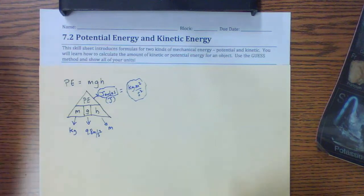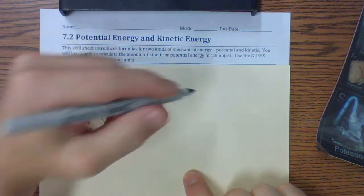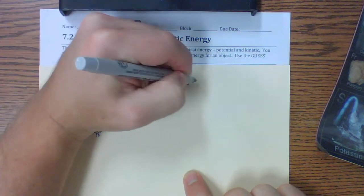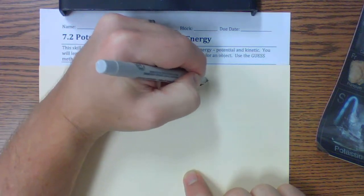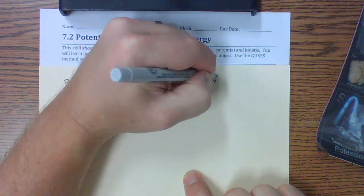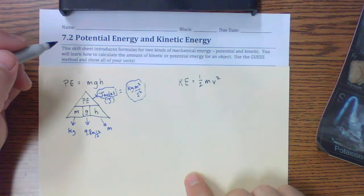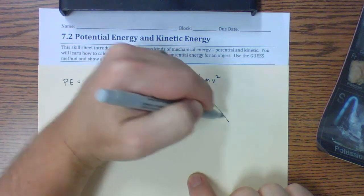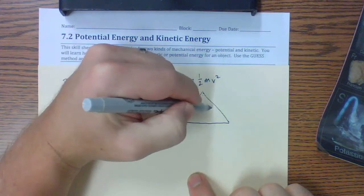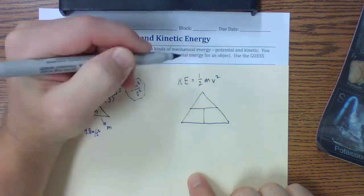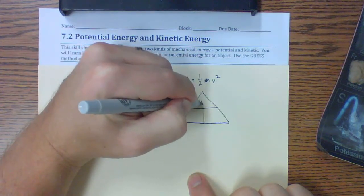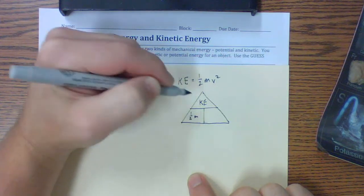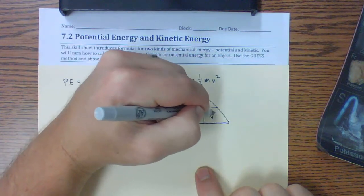Our second equation is our kinetic energy equation. Kinetic energy is equal to one-half the mass times the velocity squared — that's our relationship. We can put this into a triangle as well, though this triangle is a little different. We put kinetic energy at the top, half of the mass on one side, and the velocity squared on the other.